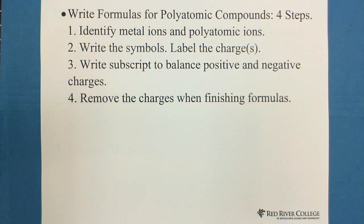For writing formulas for polyatomic compounds, there are four steps to follow. The first step is identify metal ions and polyatomic ions. The second, write the symbols and label the charges.